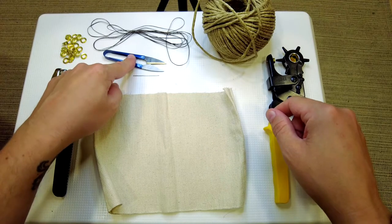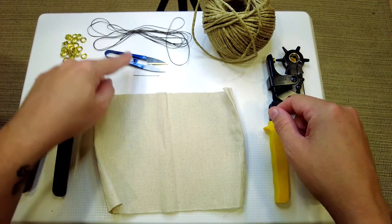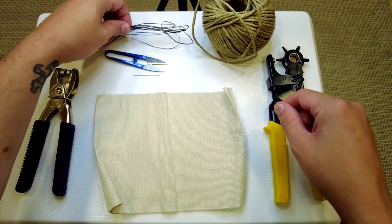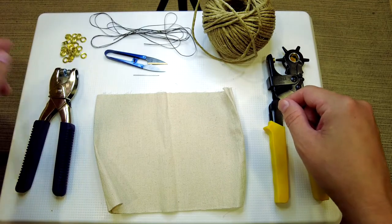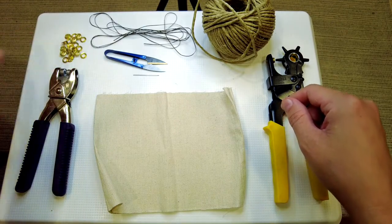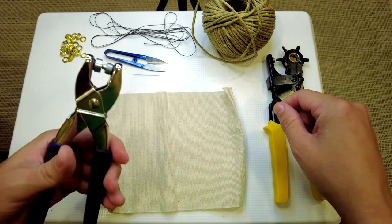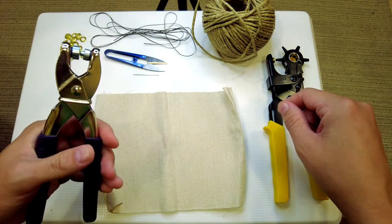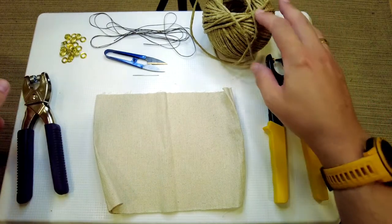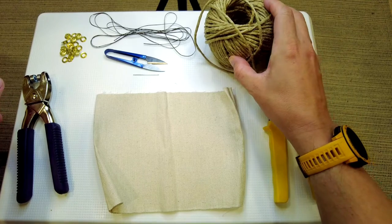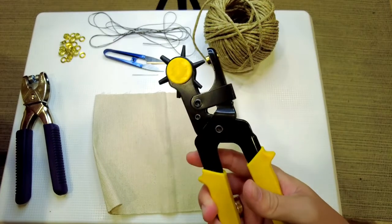We need some scissors, a needle, I'm using some brown wax thread for the sewing. We've got some eyelets and the device for pressing the eyelets in. I've got some hemp twine and also a hole puncher.